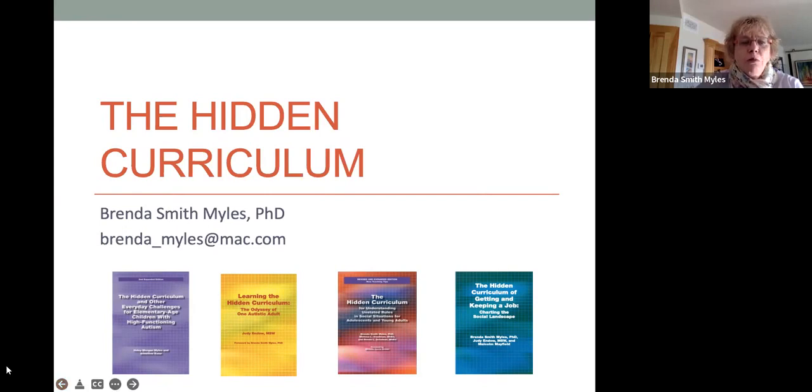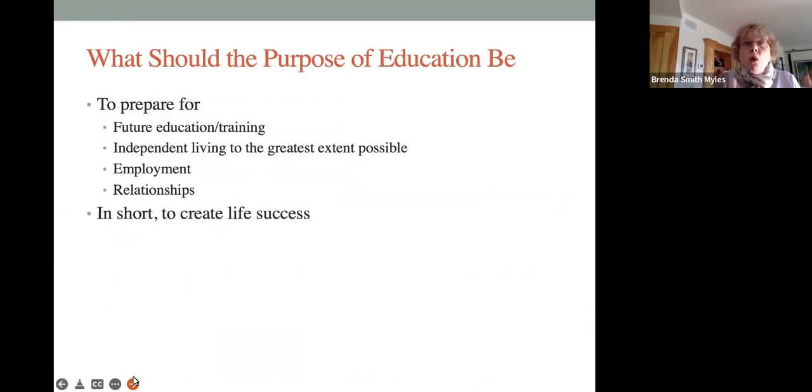It seems as if the world is getting more complex every day, and as a result, our kids are more complex. When we are teaching or supporting students, or even parenting, we're trying to figure out what we are supposed to do, what we are supposed to teach. In the school system, when we are teaching our students with autism, or indeed any students, we should be making sure that our students have the skills so that they can engage in future education or training when they leave us, that they can live as independently as they possibly can, that they can have a job, and that they can have relationships.